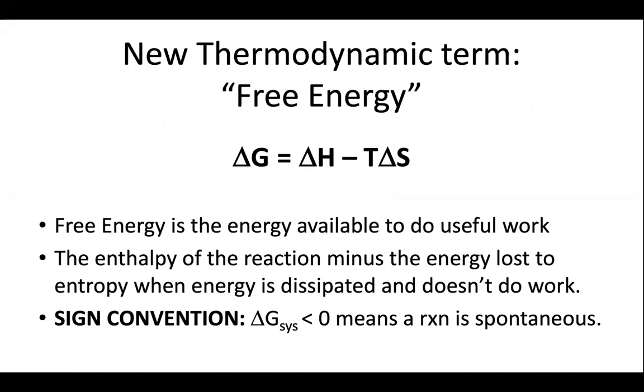Now we also learned about in Chem 105 and earlier this semester, we talked about delta G, which is free energy. And delta G equals delta H minus T delta S. Free energy is defined as the energy available to do useful work. And the reason is we're taking the heat that's released from the reaction and we're subtracting out the energy that's going to be dissipated and going into the randomness of movement and can't be used to do work.